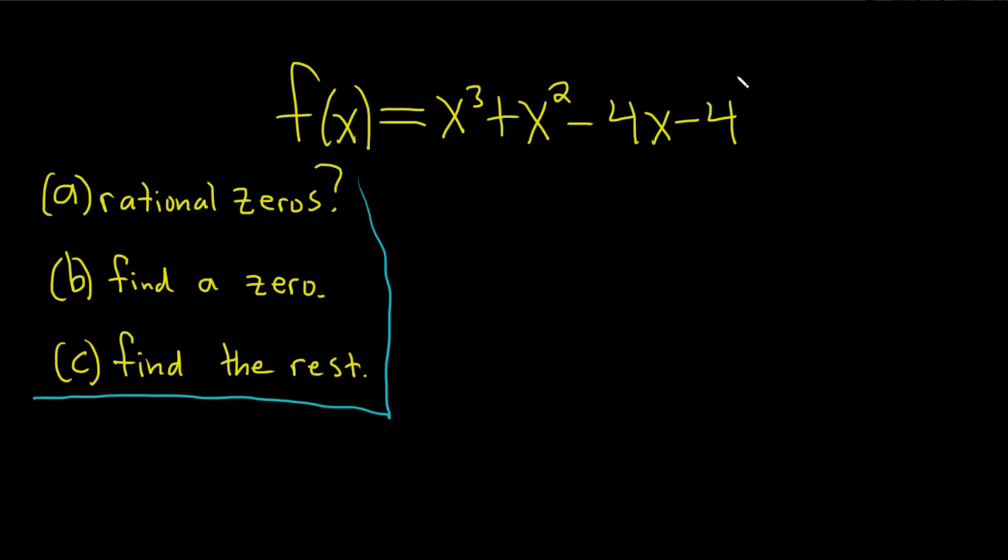So we're going to start by looking at the possible rational roots or the possible rational zeros. So to do that, we look at the factors of the last one. So factors of negative 4. And then you divide by the factors of this number here. It's always the last one over the first one. So factors of negative 4 over the factors of 1. And so the factors of 4 are 1, 2, and 4. Or factors of negative 4 are 1, 2, and 4. And we always have to put a plus or minus. So plus or minus 1, plus or minus 2, and plus or minus 4.